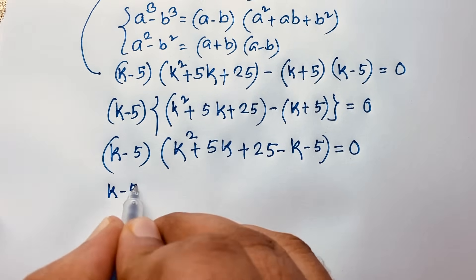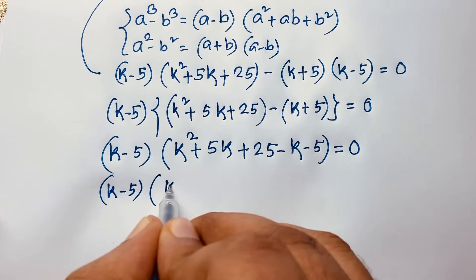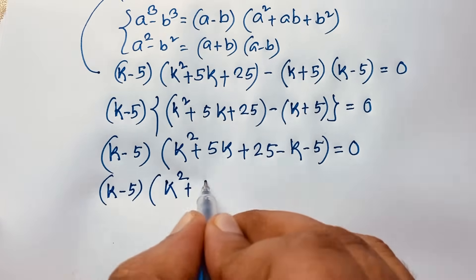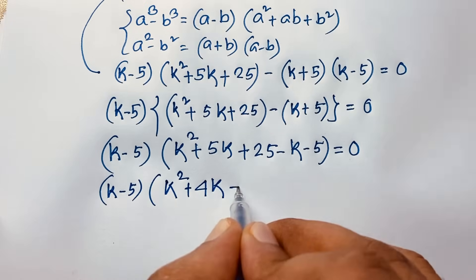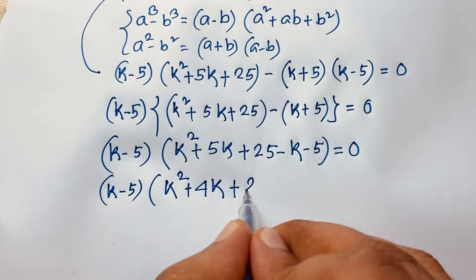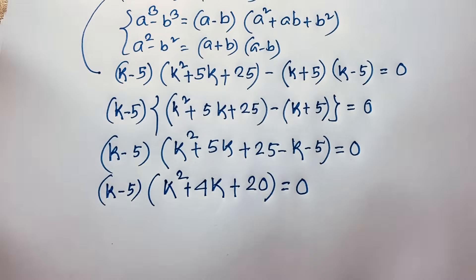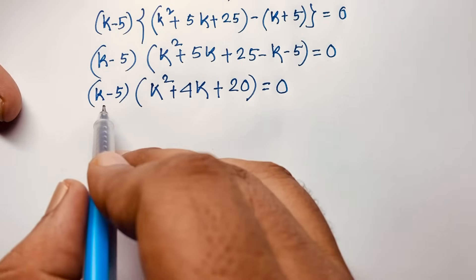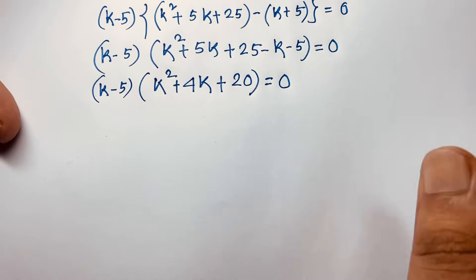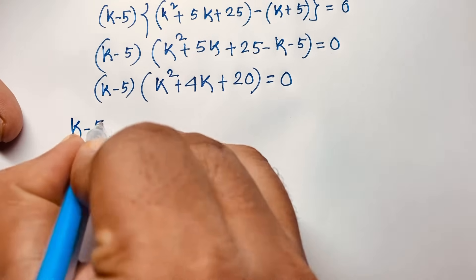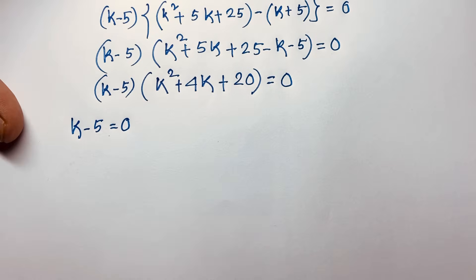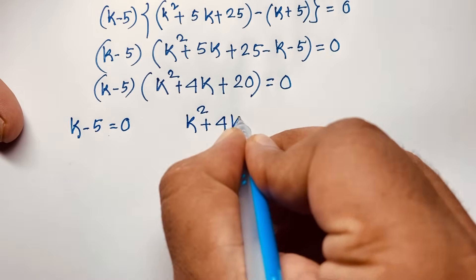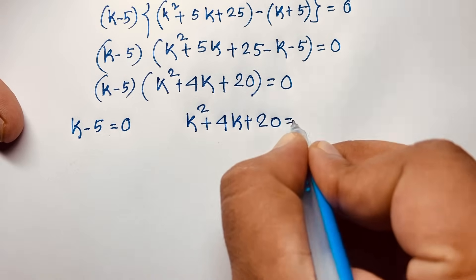So at this moment, k minus 5 times (k squared plus 4k plus 20) equals 0. We find here a nice quadratic equation and the other case k minus 5. So k minus 5 equals 0, giving k equals 5. And in the other case, it will be k squared plus 4k plus 20 is equal to 0.